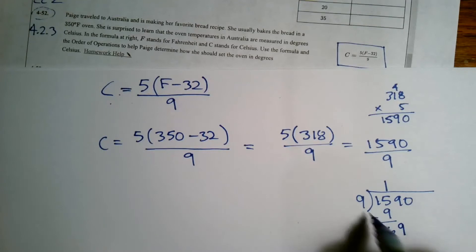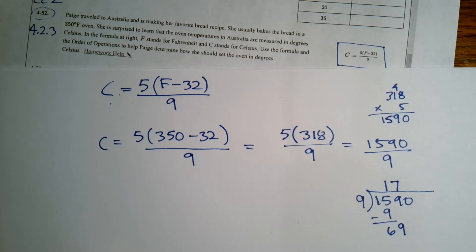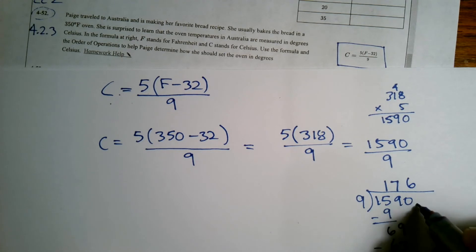9 into 69 gives me, let's see, that's going to be 7 times. 9 times 7 is 63. Subtract, you get 6. Bring down the 0. 9 into 60 would be 6 times to give me 54. And again, subtract, I get 6.